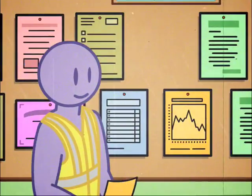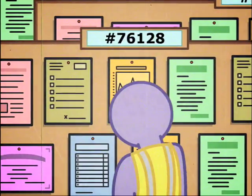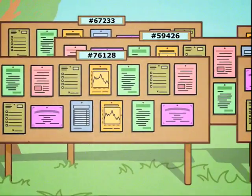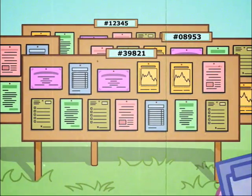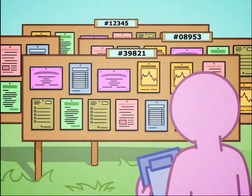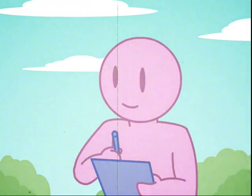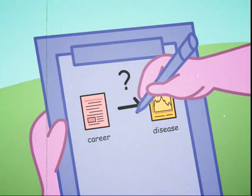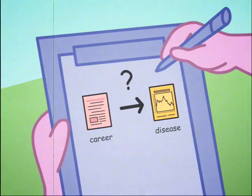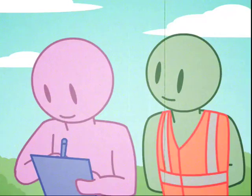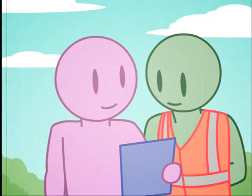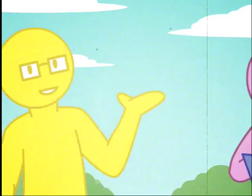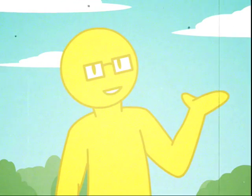Programmers prepare the data for research and remove information that may identify a person. In order to access data, researchers must outline their research question and demonstrate its contribution to society — for example, linking between certain jobs and the development of disease. If a request is approved by a data steward, the researcher must sign a confidentiality agreement and legally agree not to use the data for any other purpose.